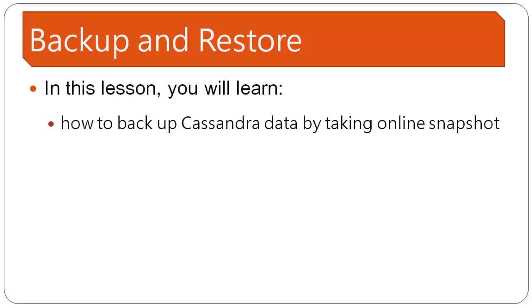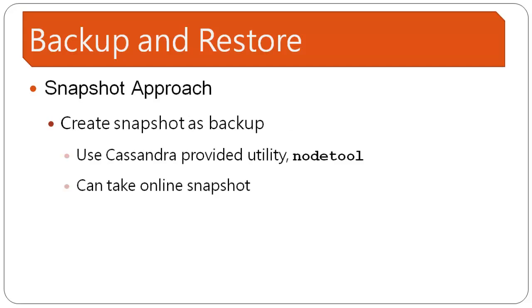Let's have an overview of the Snapshot Approach. Basically, the Snapshot Approach is very simple. We'll use the Cassandra provided command line utility called nodetool to create a Snapshot Image, and this operation can be done online, which means the Cassandra instance is still up and running while the snapshot is being taken.